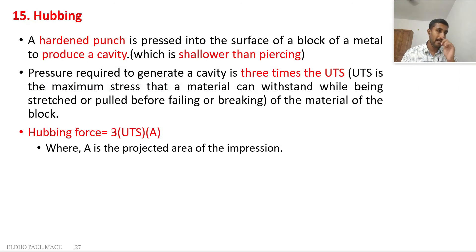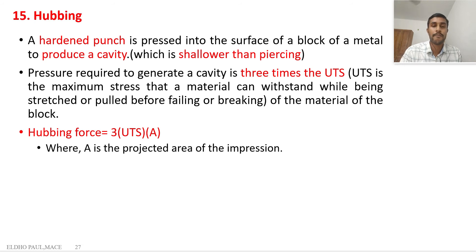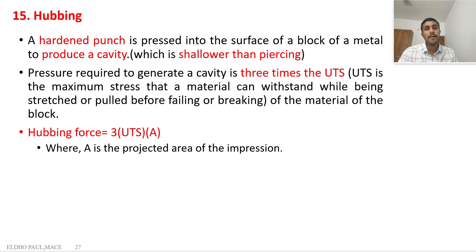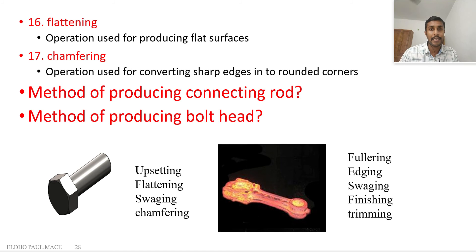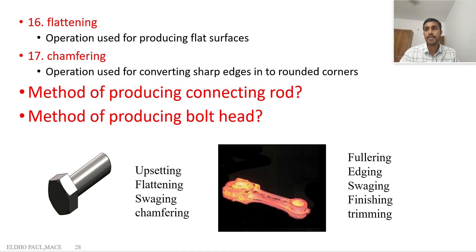Hubbing is where a hardened punch is pressed into the surface of a block of material to produce a cavity. It is similar to the piercing operation, but compared to piercing, hubbing produces a shallower cavity. After hubbing, we have the flattening operation to maintain a flat surface — after forging, different types of products may need a flat surface, so we perform flattening.